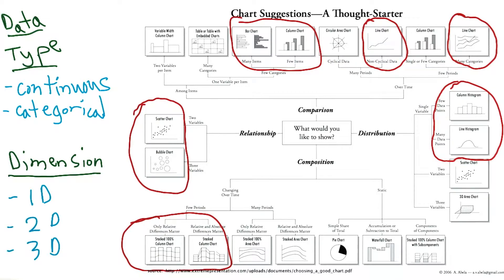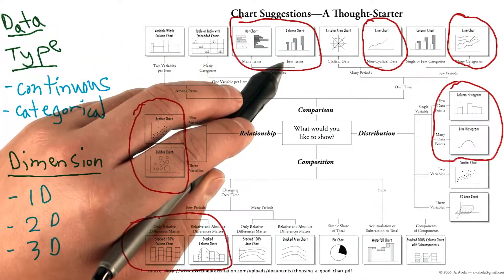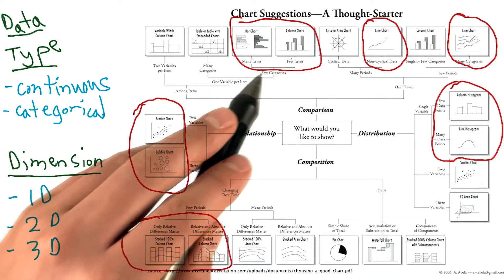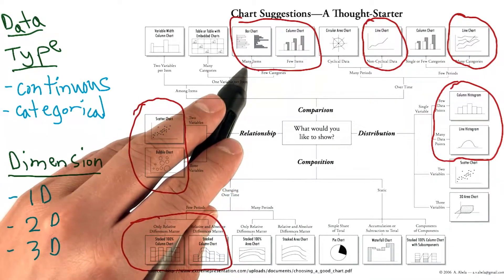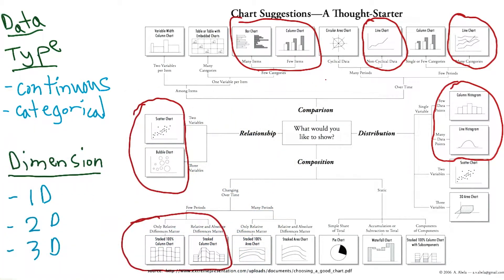If you remember from the previous video, we mentioned that bar charts, and in this case, what the author labels as a column chart, can be used to represent a distribution. And if we simply put every column of a bar chart side by side and visualize how it changes, we can compare each of the categories.